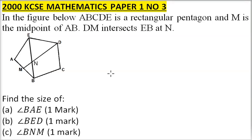2000 KCSE Mathematics paper number 3. In the figure below, ABCDE is a rectangular pentagon, and M is the midpoint of AB.